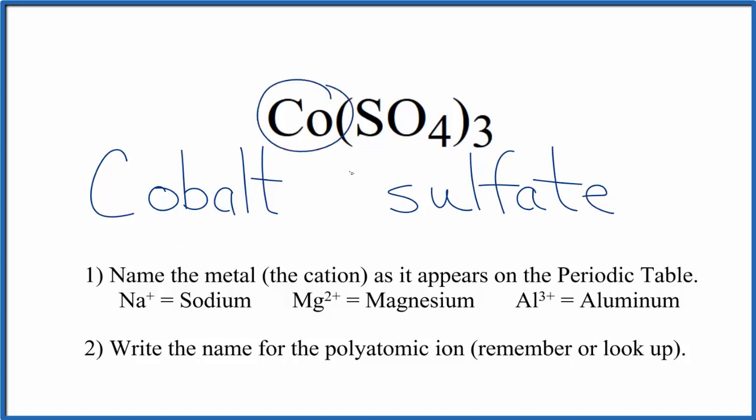But cobalt is a transition metal, so we need to take into account the charges on the ions. We know that the sulfate ion, the whole thing, is 2 minus, and we have three of them, so that's going to be 6 minus, 3 times 2 minus, 6 minus.